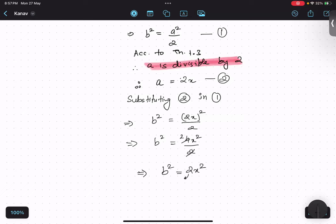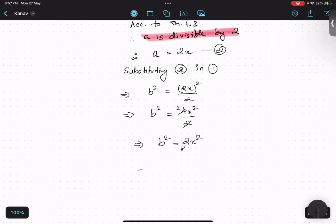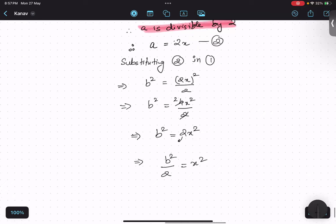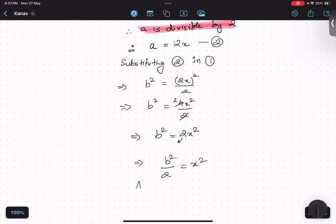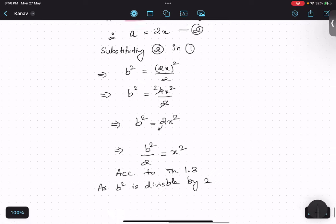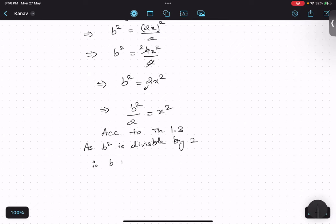Again, I am going to shift this 2 to the other side. So, B square upon 2 equals x square. Again, by same theorem number 1.3, according to theorem 1.3, as B square is divisible by 2, therefore B is also divisible by 2. Which means that B is also in the multiple of 2.